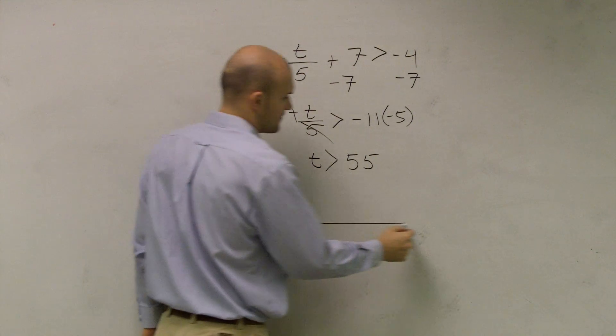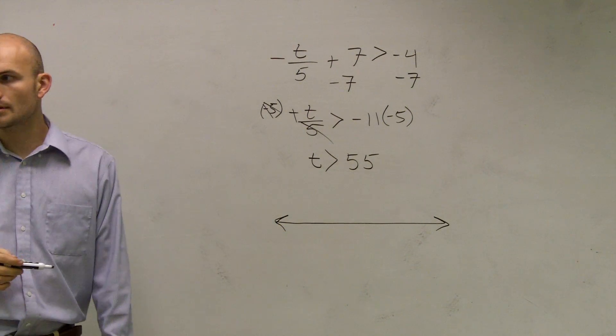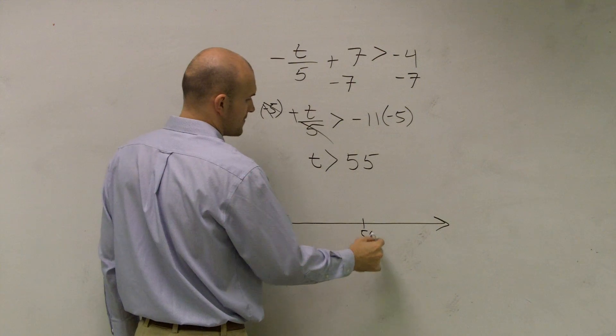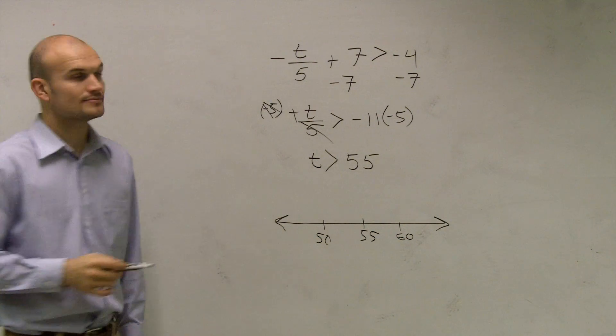So I go to graph. And when I go to graph, let's say, let's just pick, this is 55. That's 60. That's 50.